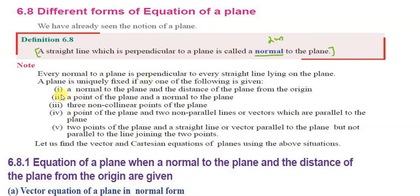Next, we will see the different forms of the equation of a plane. The first form uses a normal to the plane and the distance of the plane from the origin. The second form uses a point on the plane and a normal to the plane.